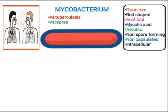Another example is Mycobacterium leprae, which causes leprosy. In this condition, the peripheral nervous system is affected and even paralysis can occur. There is also Mycobacterium bovis, which causes tuberculosis in cattle or cows. It can be transmitted to humans through contaminated milk from infected cattle.